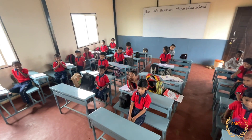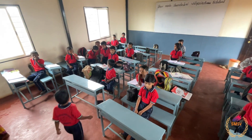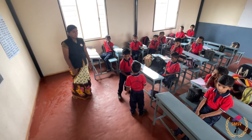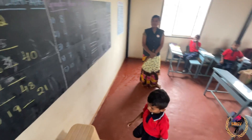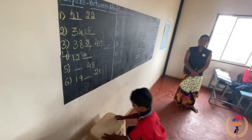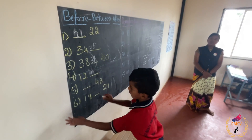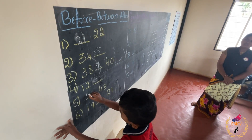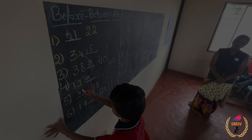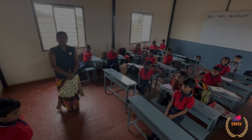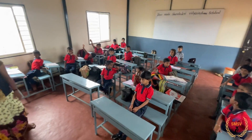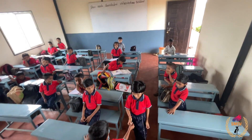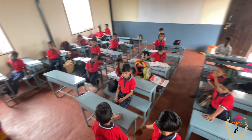Come, pass. Give me the name. Go. Before 48, which number? Between 19 and 21 — come, Adi — which number?